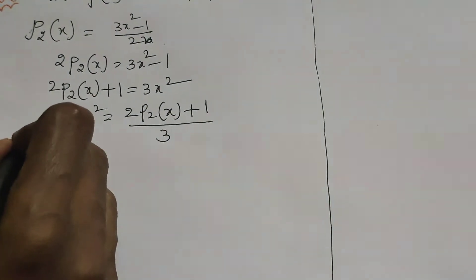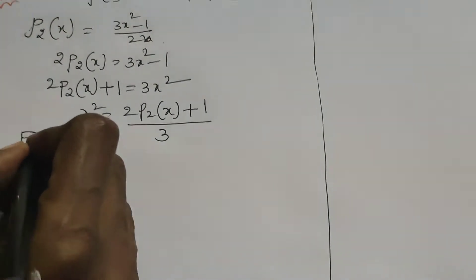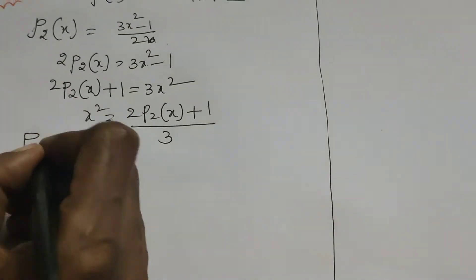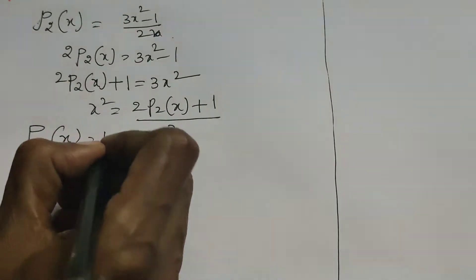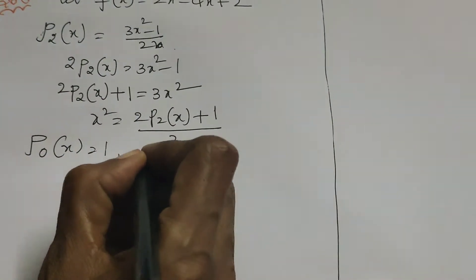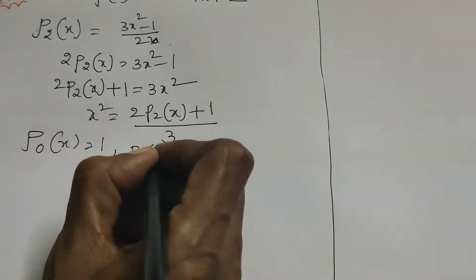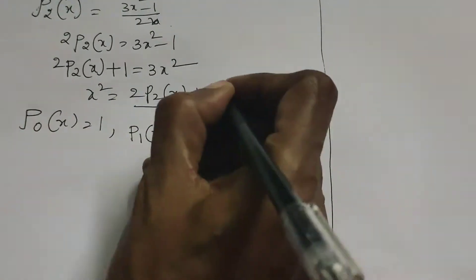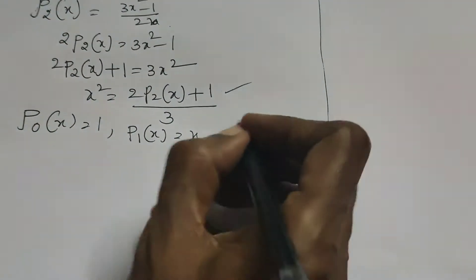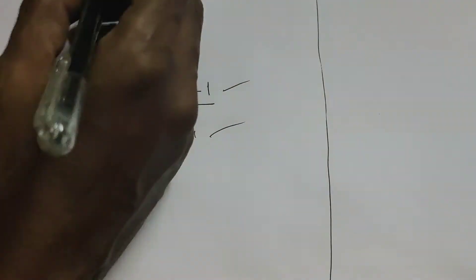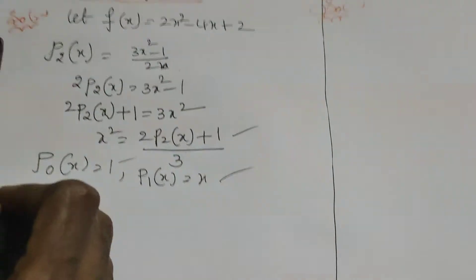We know that P0(x) = 1 and P1(x) = x. Substituting these into the given function.